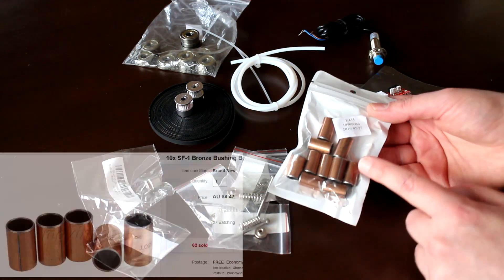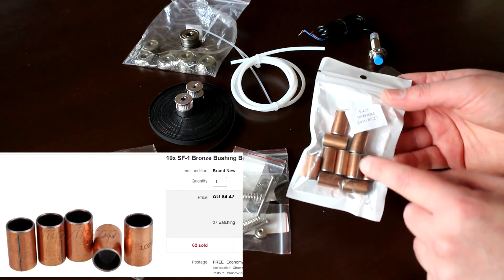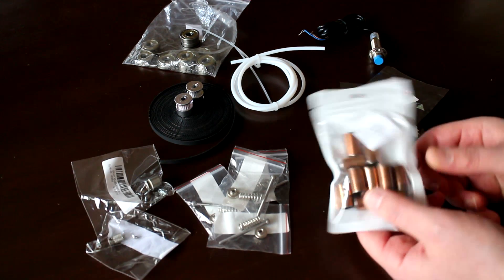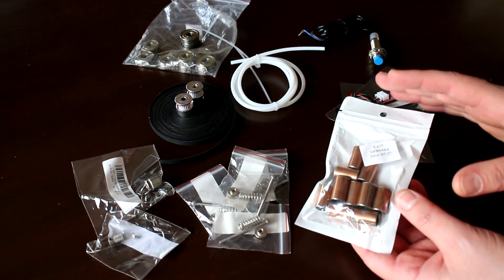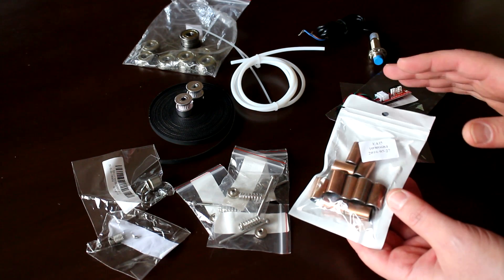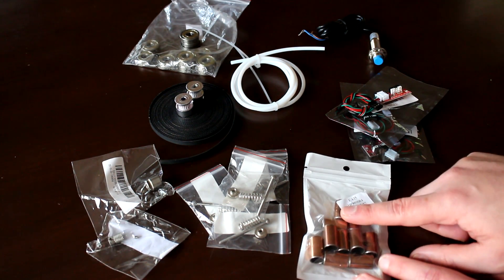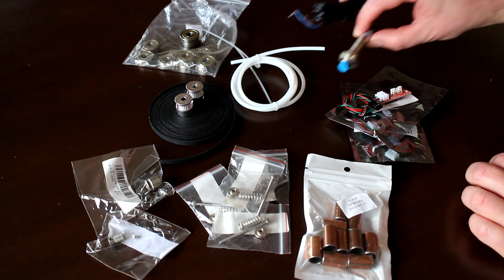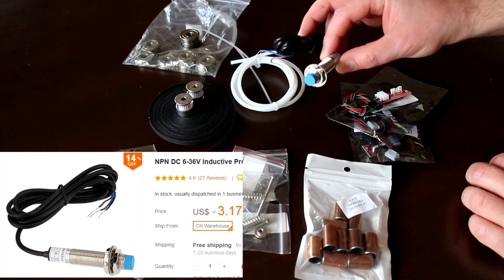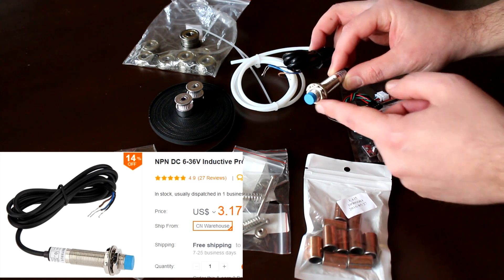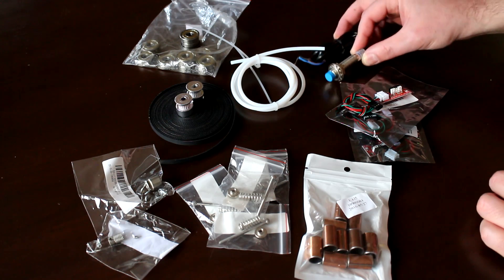Off eBay I picked up some 10 millimeter by 20 millimeter in length bronze bushings. I'm going to see if I can move away from the linear ball bearings that we're currently using. This is going to be something interesting to try. Also picked up from the same website the induction sensor. I'll be installing that on my current printer first before moving across to the new printer.